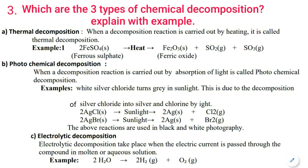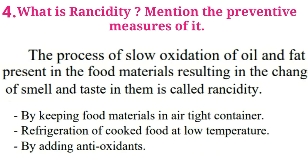The first type is thermal decomposition — if decomposition is carried out by heating, it is called thermal decomposition. The second type is photochemical decomposition — 'photo' means light; if decomposition is carried out in the presence of light, it is photochemical decomposition. Example: silver chloride. The third type is electrolytic decomposition, which takes place when electric current is passed through the compound in its molten or aqueous solution. Example: water.